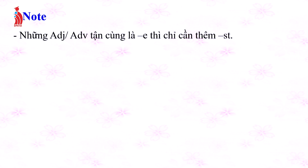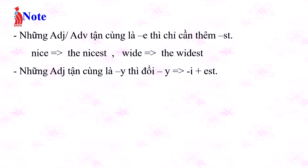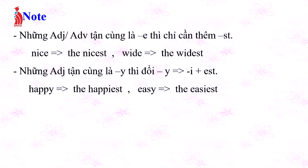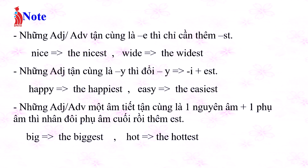Some notes for superlative: Adjectives ending in -e just add -st (e.g., nice → the nicest, wide → the widest). Adjectives ending in -y change -y to -i then add -est (e.g., happy → the happiest, easy → the easiest). One-syllable adjectives ending in vowel + consonant double the final consonant and add -est (e.g., big → the biggest, hot → the hottest).